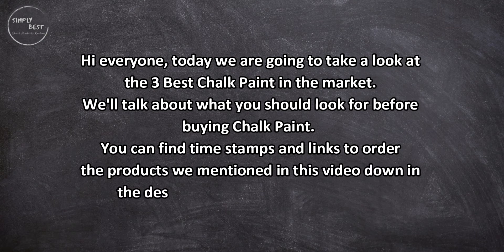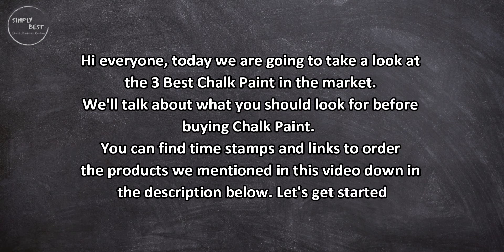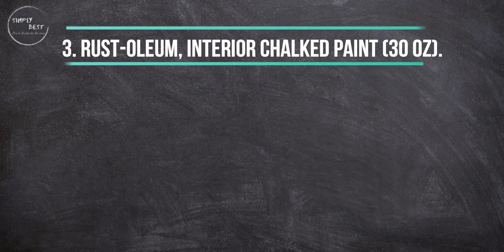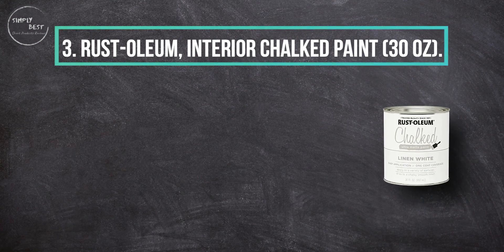Let's get started. At number three: Rust-Oleum interior chalked paint, 30 ounces.